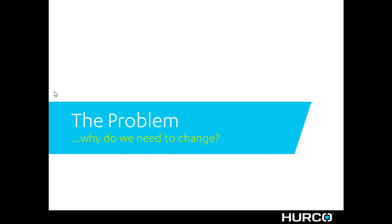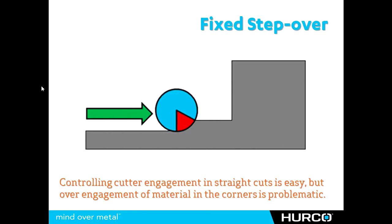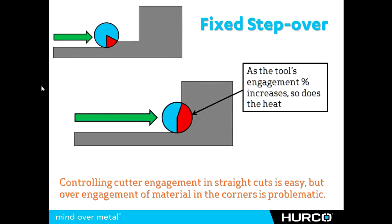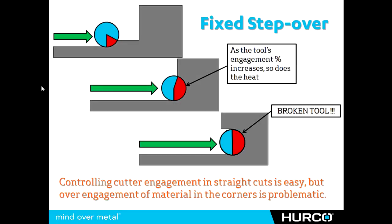Before we can talk about what Adaptive Path is and how it works, we need to discuss the problem and why we need something like this. When we're machining a part and we have a consistent straight cut like in this top picture, it's very easy to control the amount of material that tool is going to engage, or the angle of engagement. However, as that tool reaches into corners or where it may encounter more material, heat is going to begin to build up, causing more pressure on the tool and eventually breaking it.